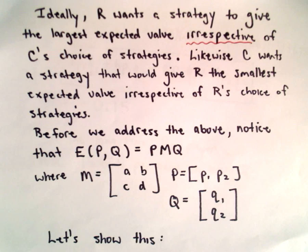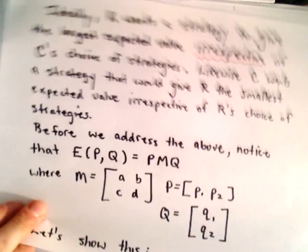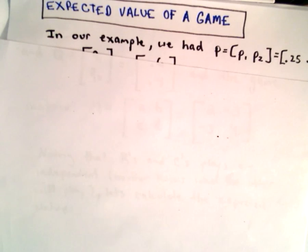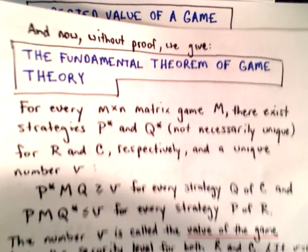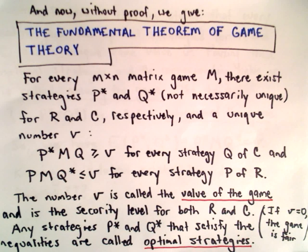Alrighty, so a few remarks here. And then we'll actually finally jump into finding the optimal strategy and pointing out some remarks about that. So again, without proof, we've now got what's known as the Fundamental Theorem of Game Theory.